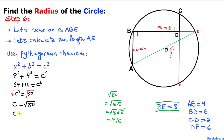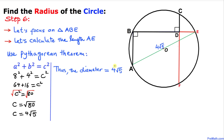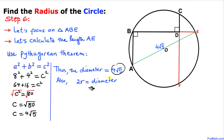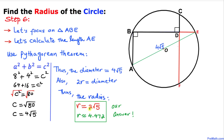The square root of 80 can be simplified to 4 times the square root of 5. So our diameter turns out to be 4 times square root of 5. Since diameter equals 2 times R, our radius is half of that, which is 2 times square root of 5. R is approximately equal to 4.472. Please don't forget to subscribe to my channel for more exciting videos. Bye.